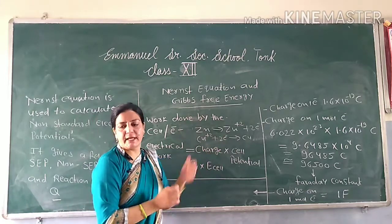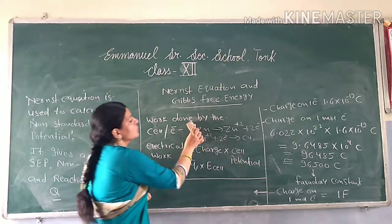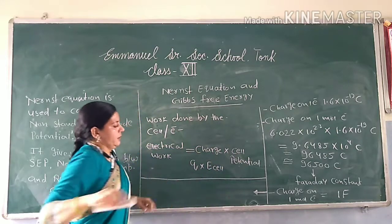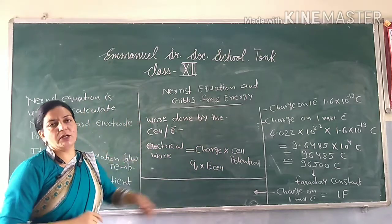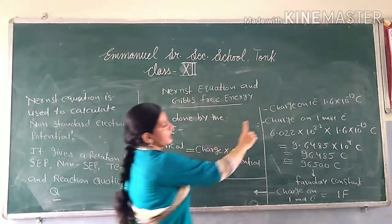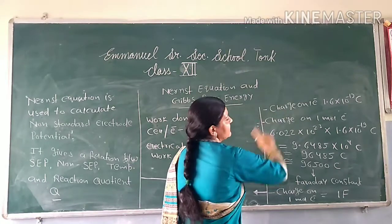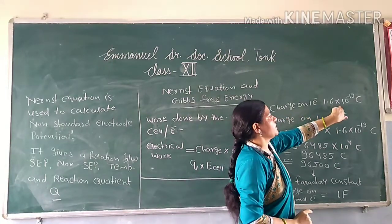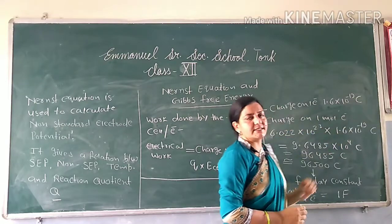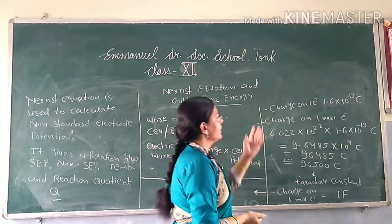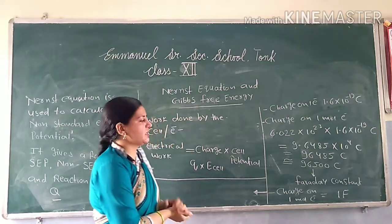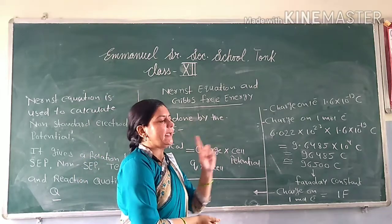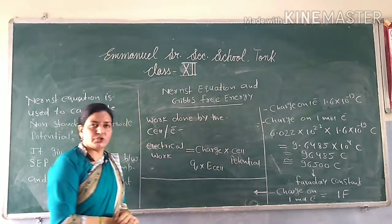So here we have a mole for calculation. What is charge? We learn from our basic classes that the charge on one electron is equal to 1.6 × 10⁻¹⁹ coulombs. This is the charge on one electron.